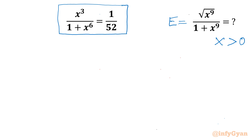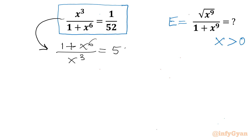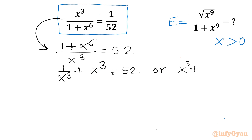I will begin by considering the reciprocal of the known equation. So I will write 1 plus x to the power 6 over x cubed equal to 52. Now splitting the numerator: 1 over x cubed plus x to the power 6 over x cubed equals 52. So x cubed plus 1 over x cubed equal to 52.